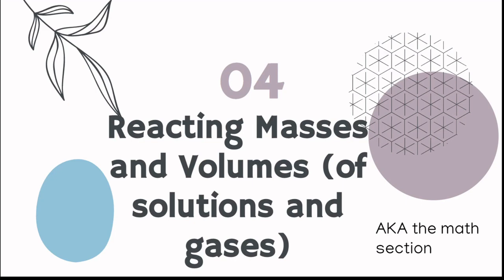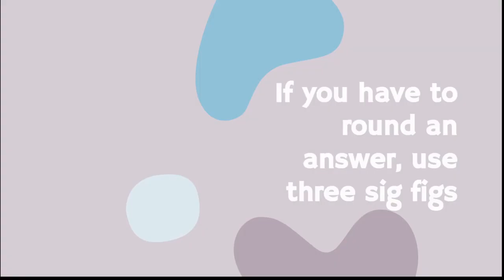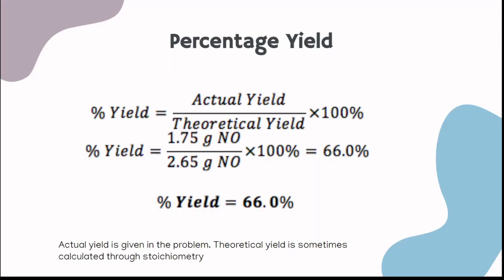Now we have the reacting masses and volumes of solutions and gases. I say aka the math section. Every part has somewhat been math section, but this one has the least amount of explanation. You have to practice this to know this. If you have to round the answer, use three sig figs. Often, they'll say you can use two sig figs or four sig figs, and they'll accept three because it's only one sig fig off. So always use three sig figs unless the problem says otherwise. So we got percent yield. Percent yield is, I thought I was going to get $50 this week from working, but I only got $30. So I would do $30 divided by 50, I would multiply by 100%, and that would be my percent yield. It works the same way in chemistry. It's your actual yield over your theoretical yield times 100%.